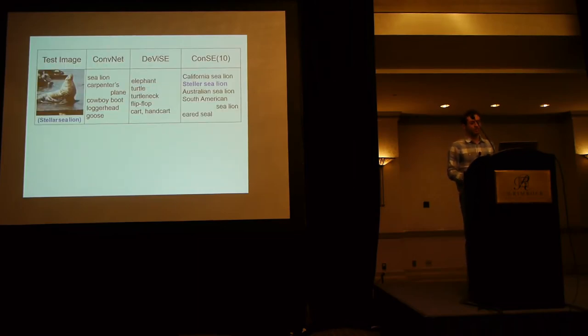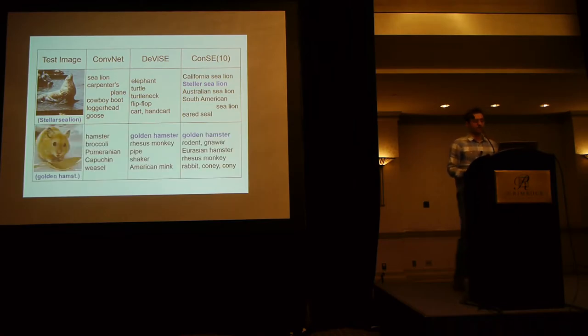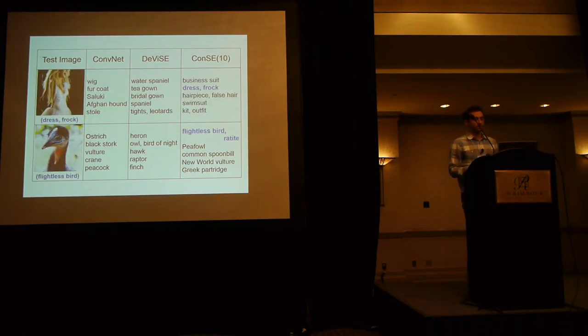Now, I'm showing some qualitative results. Here is a stellar sea lion. I don't know the difference between different types of sea lions. So if I see this image, I would probably name all of the different types of sea lions. And this is what ConSE 10 does. So it names all different sub-species of sea lions, and it gets it right. The first column shows the convolutional net predictions, and the two last columns are the zero-shot predictions by DeViSE and ConSE. Here's another example. Both DeViSE and ConSE get the golden hamster right. And here are some more results. The top one is labeled as a dress, and the bottom one is labeled as a flightless bird.